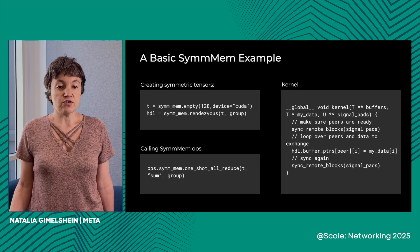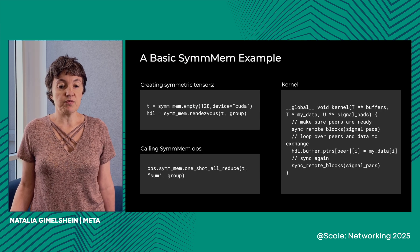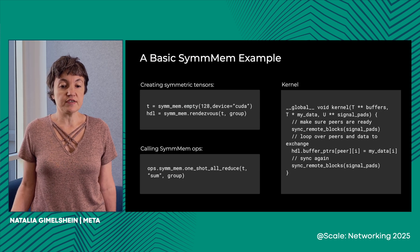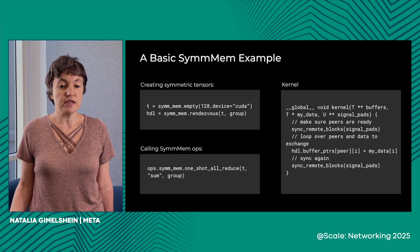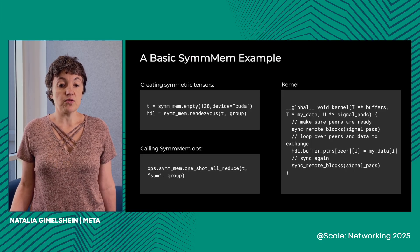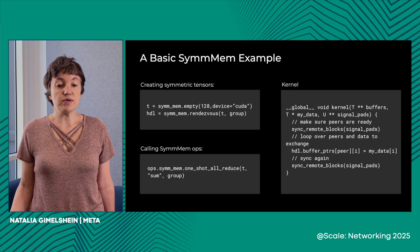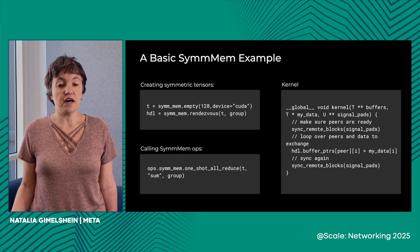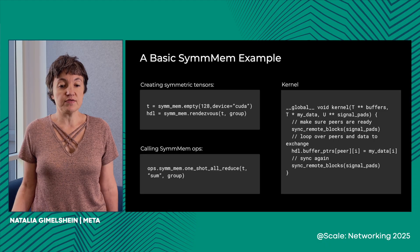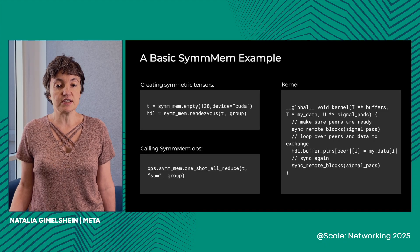If you are not writing your own kernels, you can call the symmetric memory operations available in PyTorch today. This slide shows an example of calling one-shot all-reduce, which provides very low latency all-reduce for small size messages. We also provide other common communication primitives such as broadcast, all-gather, and reduce scatter.